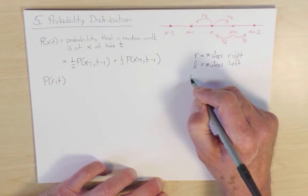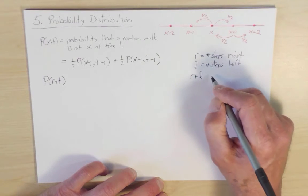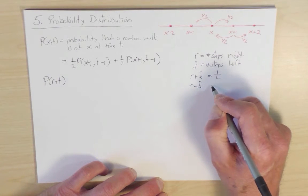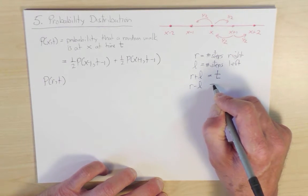And let me define little l as the number of steps to the left. And then r plus l, the sum of the number of steps to the right and to the left, is the total time t. And r minus l, the difference in the number of steps to the right and to the left, is equal to x.